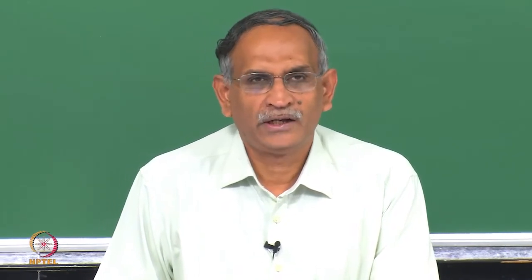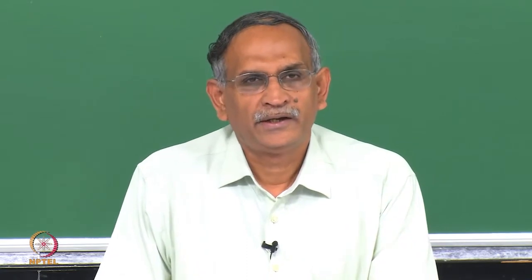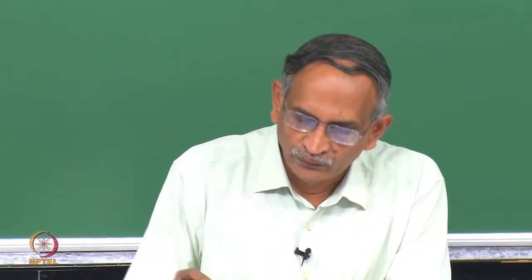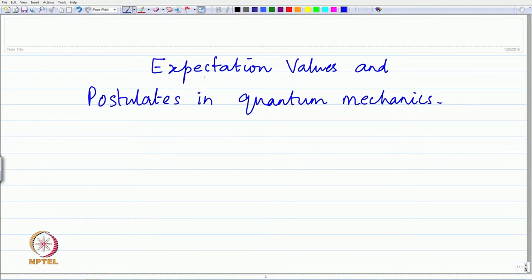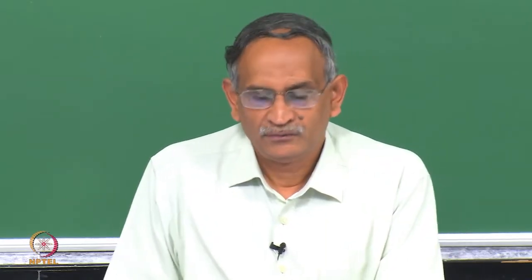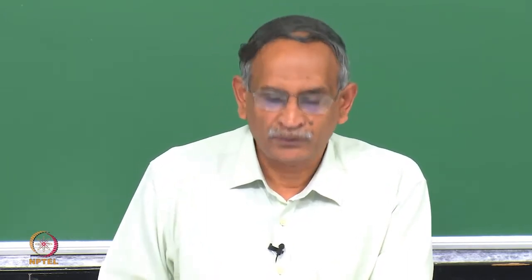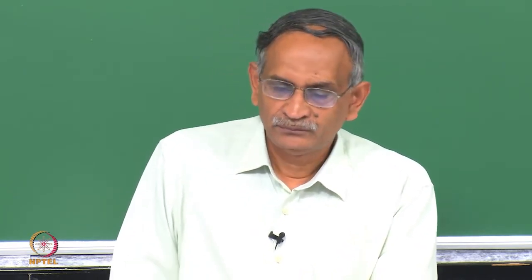Welcome back to the lecture. We continue from what was there in the last lecture on Heisenberg's uncertainty principle. I introduced a simple quantity called the average value or the expectation value. In this part of the lecture, we will consider the formal definition for expectation values in quantum mechanics and, if time permits, I shall talk more about the postulatory basis — the mathematical starting points from which we can build quantum mechanics. The postulates are mathematical in nature, but we will see simple explanations.